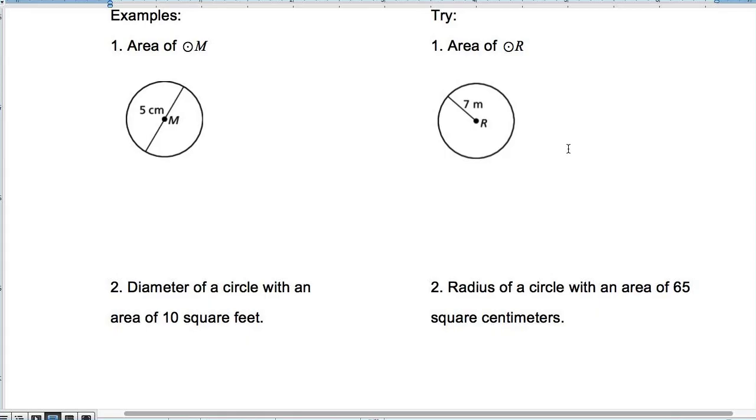All right, so for our directions, it says solve for the indicated measure. So we're just solving for the area of circle M. So here my radius is, uh-oh, how many of you would just want to try and plug in 5? Wrong! Your radius is actually 2.5 for that one. So I'm going to have pi times 2.5 squared. So 2.5 squared is 6.25.